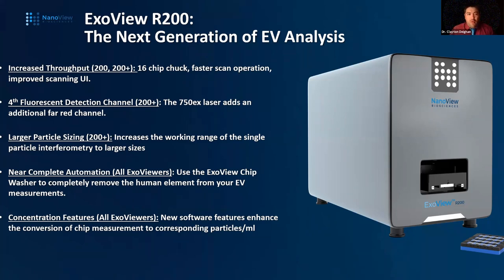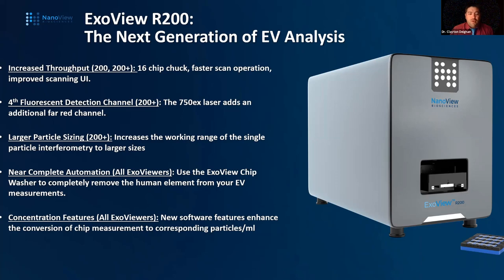The R200+ has some really cool features: mainly the fourth fluorescent detection channel. The R200+ comes with a fourth fluorescent color, which means you can do five-marker co-localization on single EVs. This laser is at 750nm excitation, adding a far-red detection channel beyond the standard red channel that excites at 647nm. Larger particle sizing is also in the R200+, using longer laser wavelengths to perform the same type of single-particle interferometry but at bigger sizes.